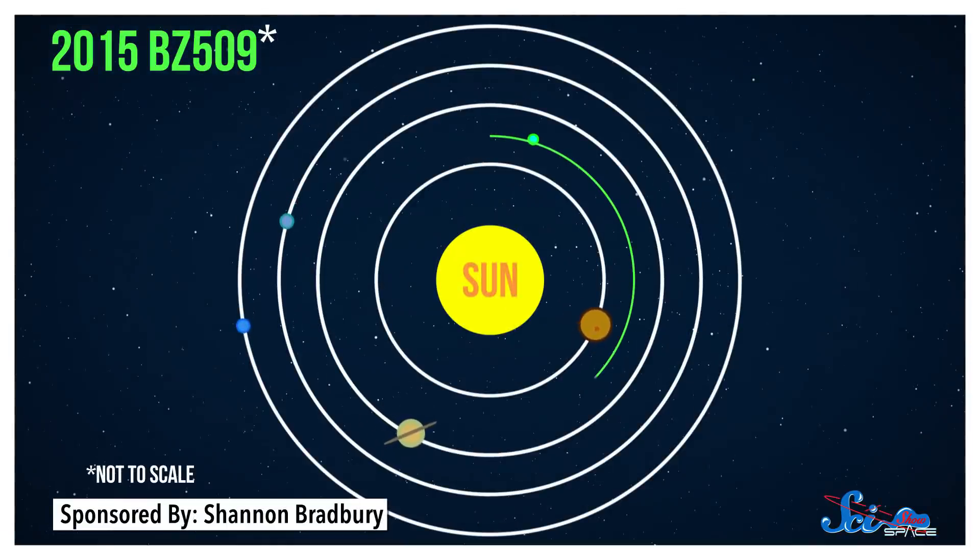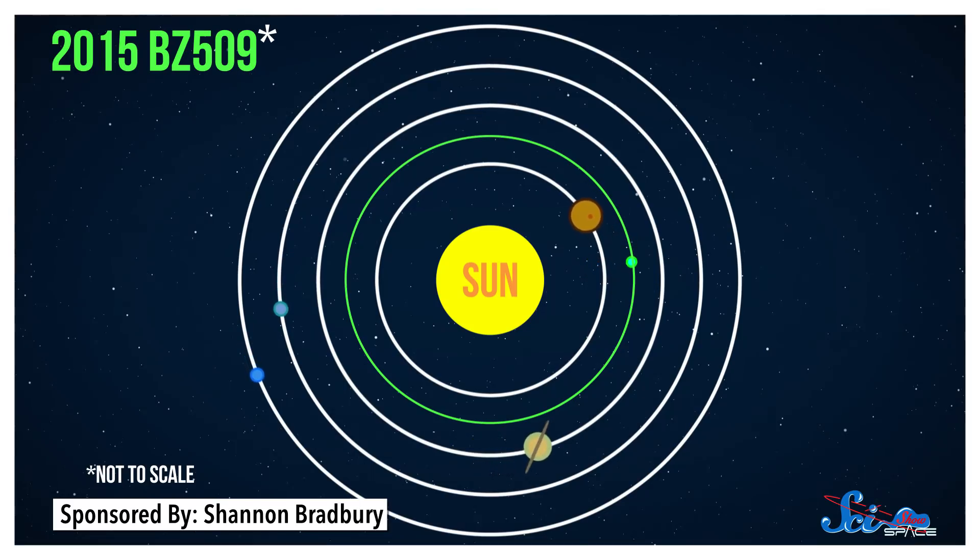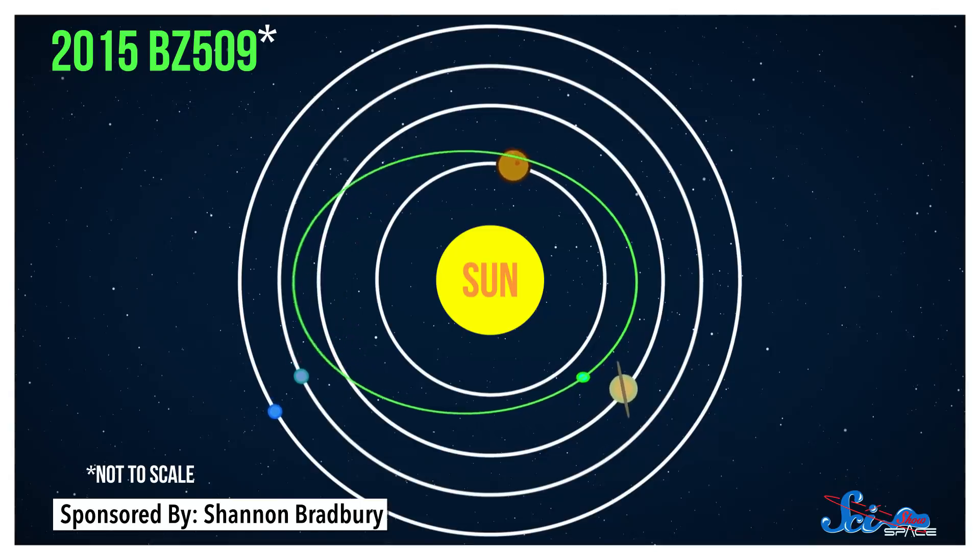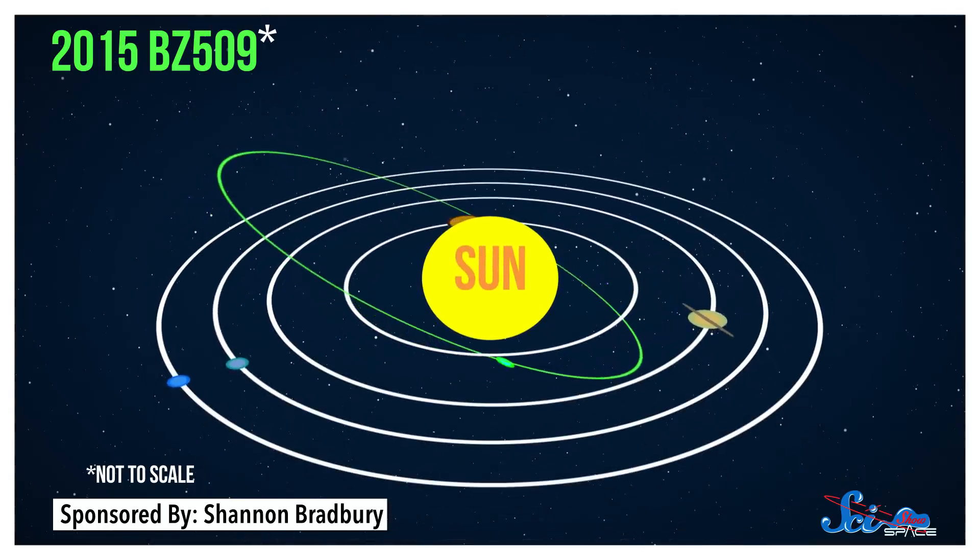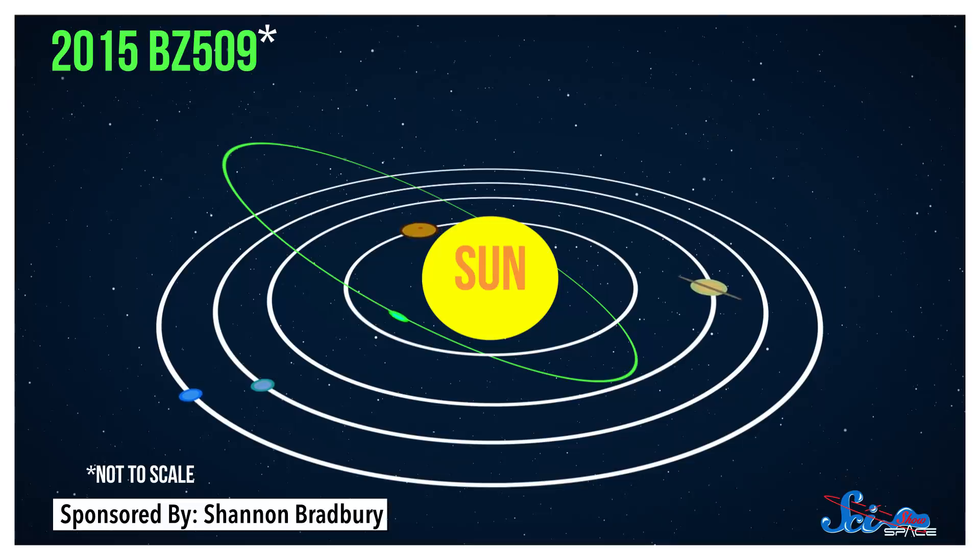For one, it moves backwards, or retrograde. It circles the Sun clockwise instead of counterclockwise, which we see in all of the rest of the solar system. Its orbit is also pretty elliptical, and it's inclined 163 degrees below the ecliptic, which means that it's at a really strange tilt.